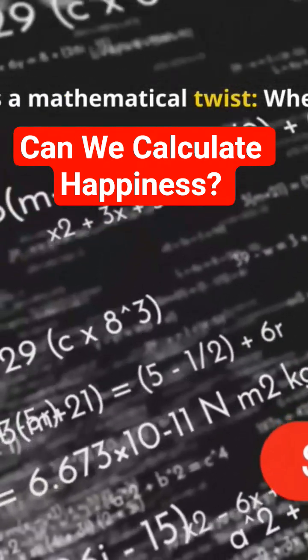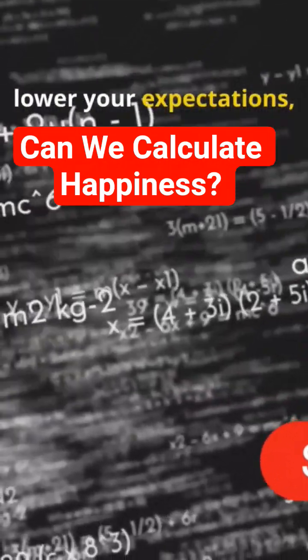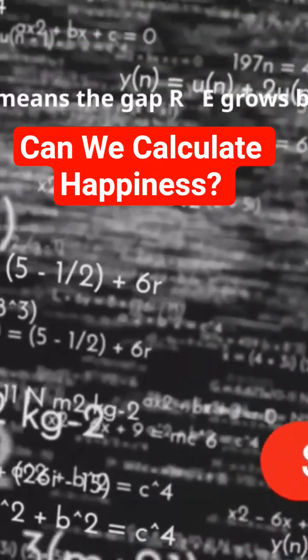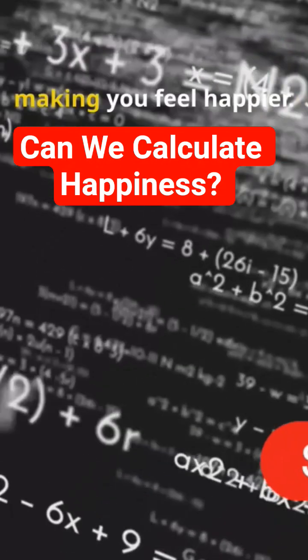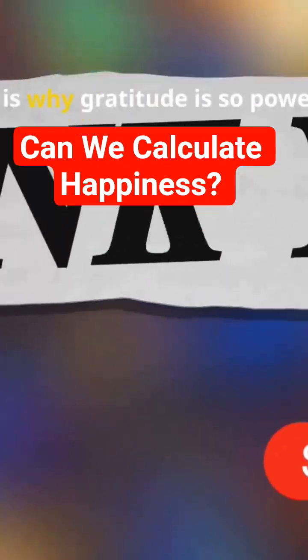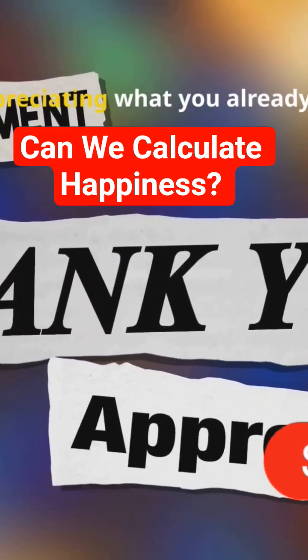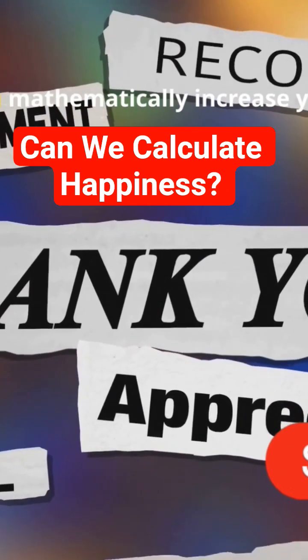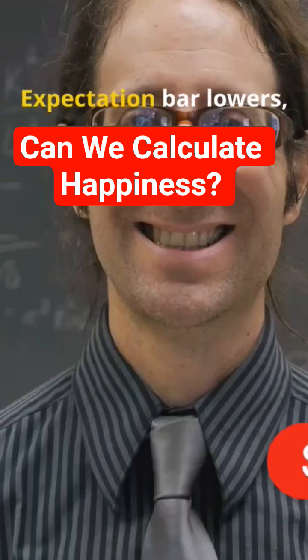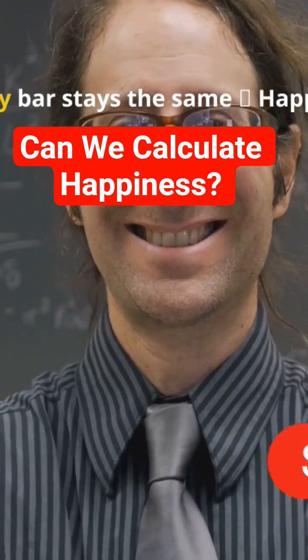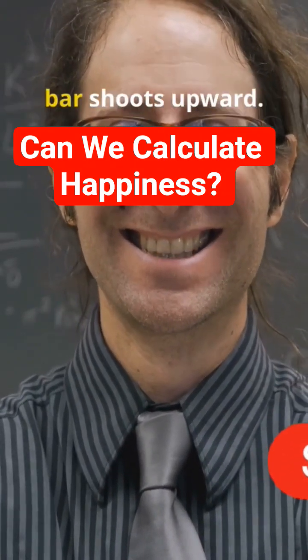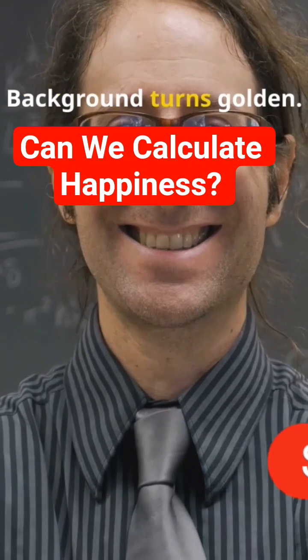Here's a mathematical twist. When you lower your expectations, the E in our first formula decreases. That means the gap R minus E grows bigger, making you feel happier. This is why gratitude is so powerful. By appreciating what you already have, you mathematically increase your happiness score. Expectation bar lowers, reality bar stays the same. Happiness bar shoots upward. Background turns golden.